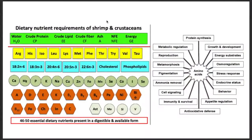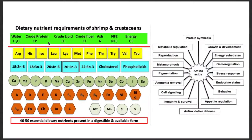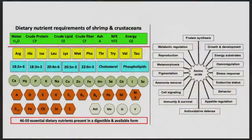In general, shrimp need protein, lipids, fiber, ashes, various other nutrients, various fatty acids, minerals, and amino acids play a very important role in shrimp nutrition as they do in other animals — such as in protein synthesis, growth and development, immunity, behavior, reproduction, and metamorphosis.